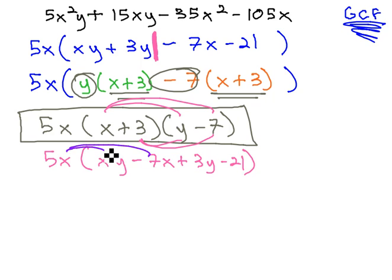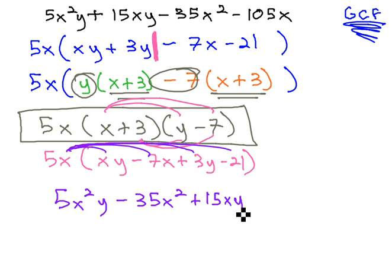Finally, finish our check by distributing the 5x through the entire thing, giving us 5x²y, minus 35x², plus 15xy, minus 105x.